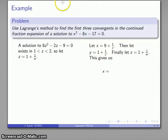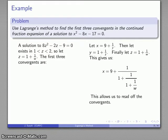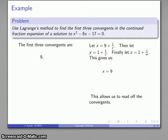What do I have? I have x equals 9 plus 1 over y. Y is 1 plus 1 over z. Z is 1 plus 1 over w. And there is the beginning of my continued fraction expansion of the solution. If I want to find the numerical value, I can just read off the convergents. My first convergent is just 9. My second convergent is 9 plus 1 over 1. My third convergent is 9 plus 1 over 1 plus 1 over 1, which is 9 and a half.